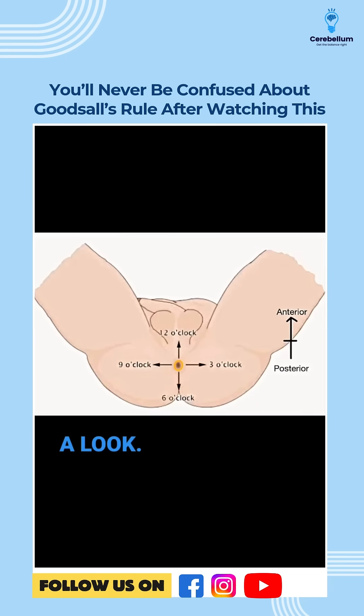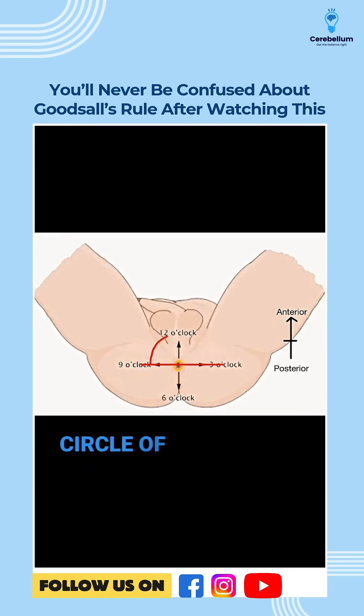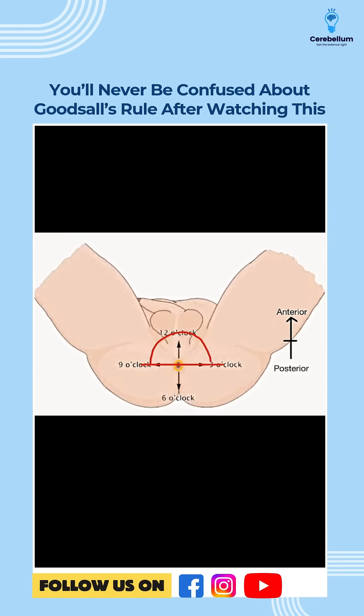In the lithotomy position, draw a horizontal line at the anal verge. Now draw a semicircle of 3cm radius anteriorly.